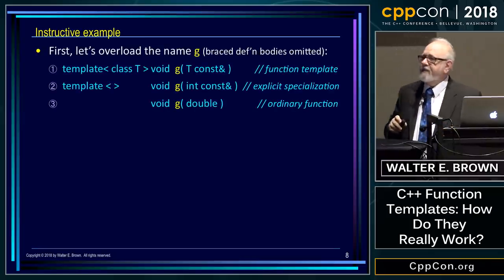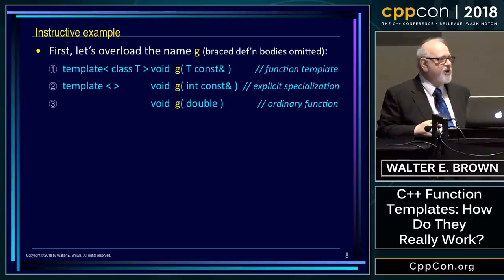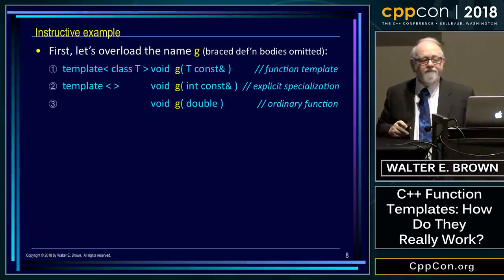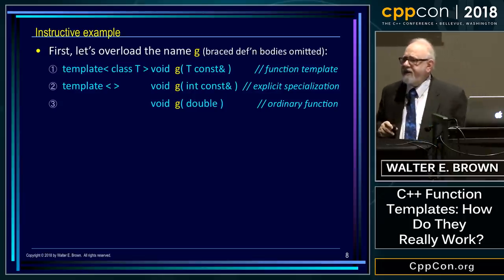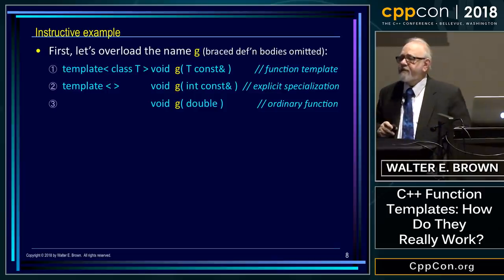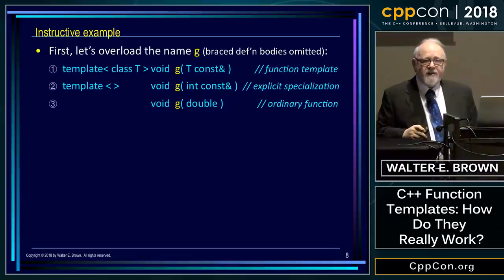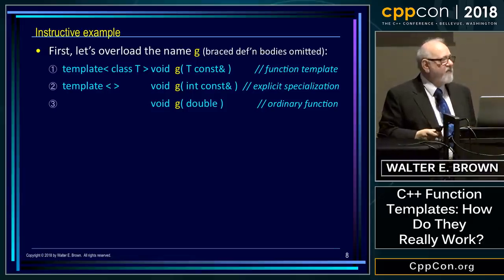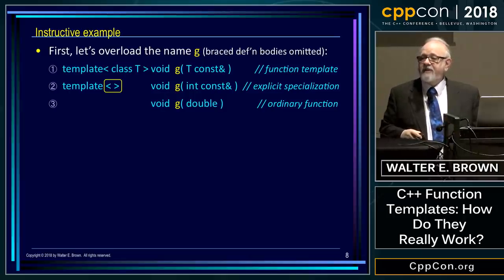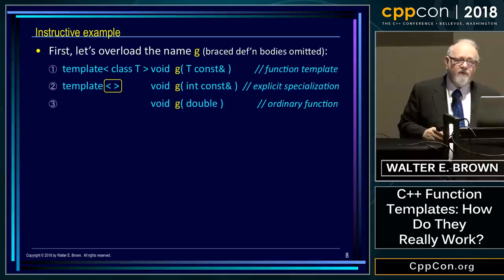Here's an example where all I've done is overload the name G. Item number three is the easiest — that's just an ordinary function, a plain old function that takes a double and doesn't return anything. Number one is a function template. Number two is an explicit specialization — the easy way to tell is to look at the empty angle brackets, which indicate this is an explicit function template specialization. It will always look like that for function templates.